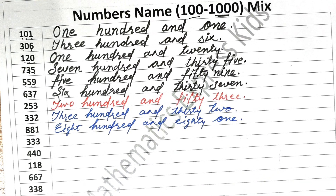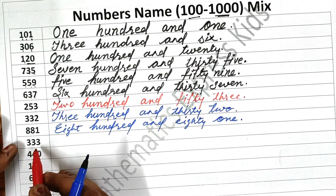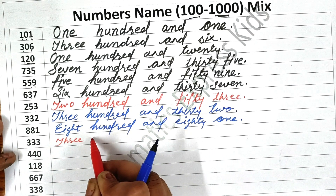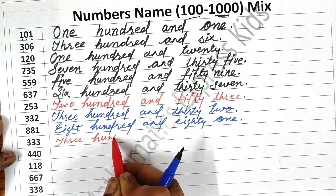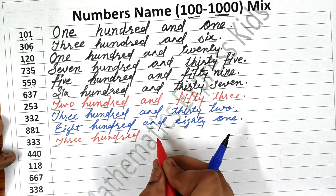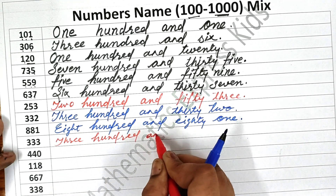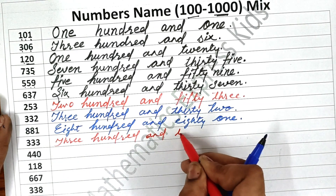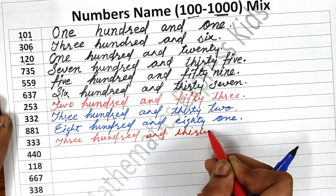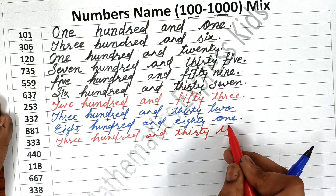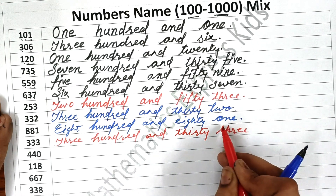Now the next one is three hundred and thirty-three. Write three hundred first — T-H-R-E-E — three hundred — H-U-N-D-R-E-D — okay. Three hundred and thirty-three: thirty — T-H-I-R-T-Y — three — T-H-R-E-E. Thirty-three. Clear?